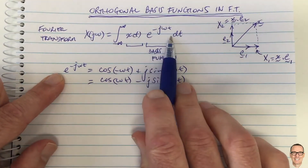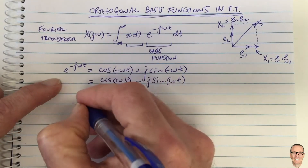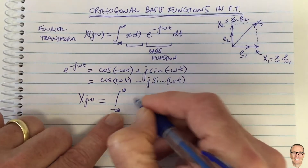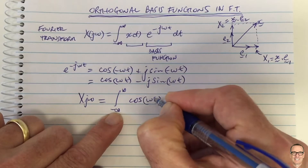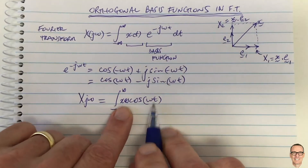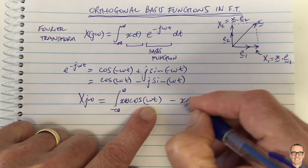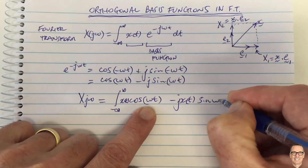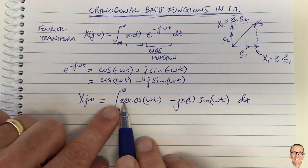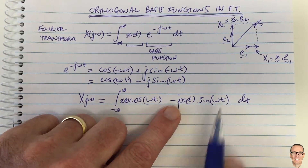We can replace this in our equation. The Fourier transform can be rewritten as the integral from negative infinity to infinity of x(t) times cos(omega t) minus x(t) times j sine(omega t). So it has a real part — projecting x(t) onto the cosine waveform — and a complex part where we're projecting x(t) onto the sine waveform.